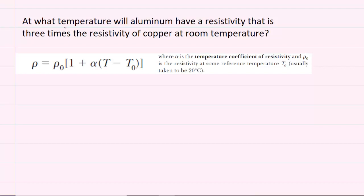In order to determine the temperature that aluminum will have a resistivity that is three times the resistivity of copper at room temperature, we're going to be using the following equation.